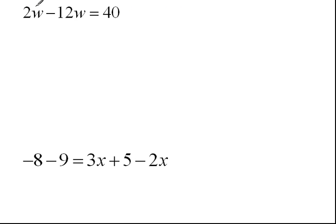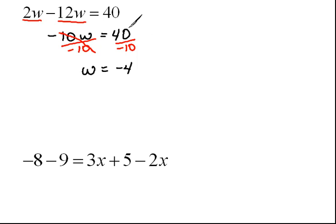So we have here an equation that says 2w minus 12w equals 40. Well the first thing that I notice is that we have w's in two different places. We can combine those like terms to give us negative 10w equals 40. Now this is a multiplication property. So to undo this multiplication, we would do the opposite. Instead of multiplying by negative 10, we would divide by negative 10. Remember we can do that as long as we do it to both sides. So the 10s would cancel, and we would have w equals 40 divided by negative 10 would be negative 4.